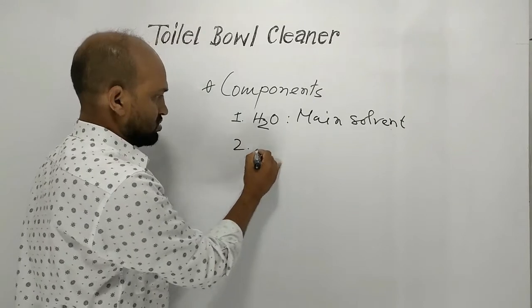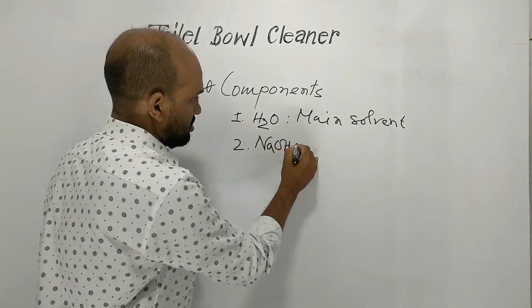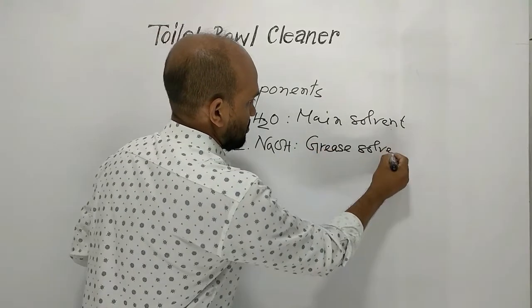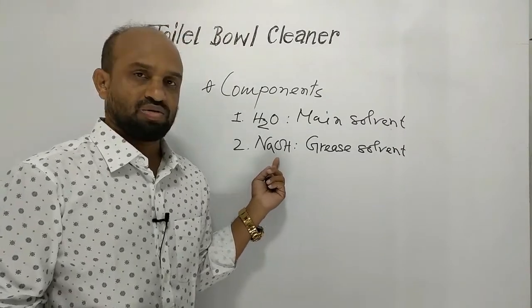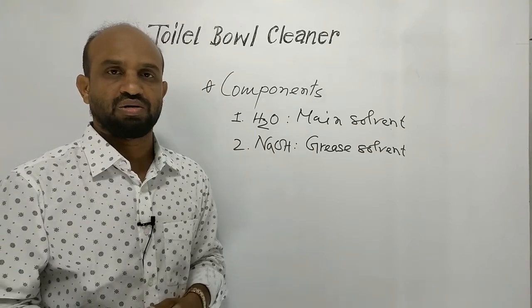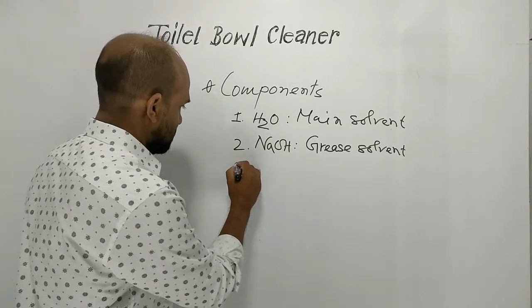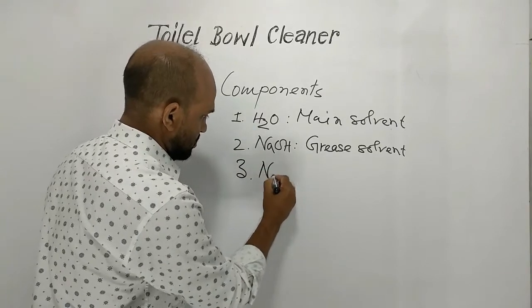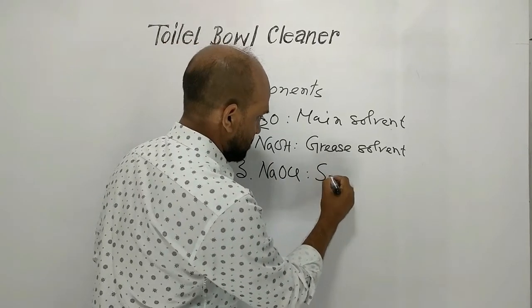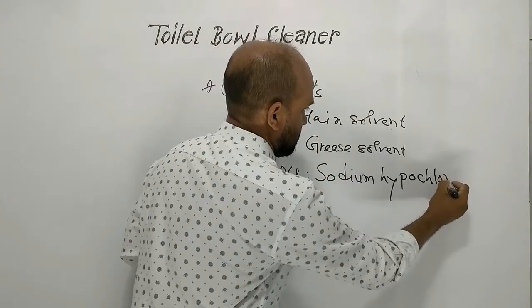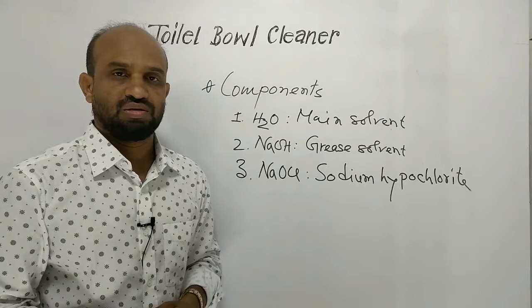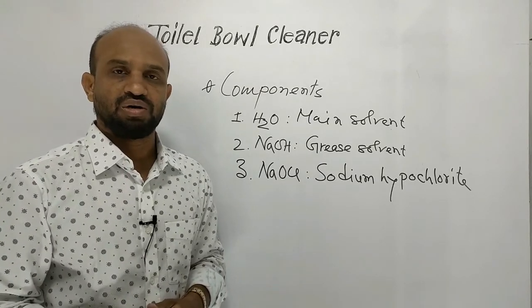Number two: sodium hydroxide. This is used as a grease solvent — that means caustic soda dissolves fats and oils, or simply called lipids. Number three: sodium hypochlorite. It is used as a stain remover and to kill germs.